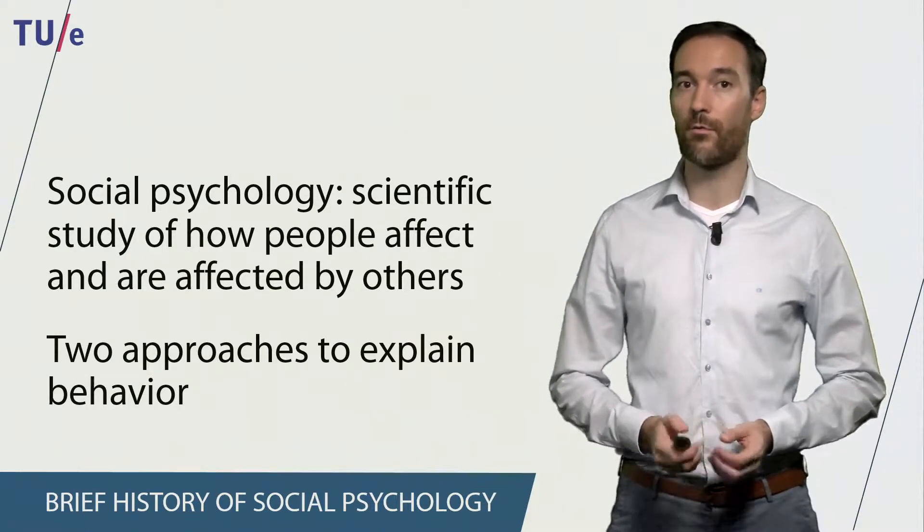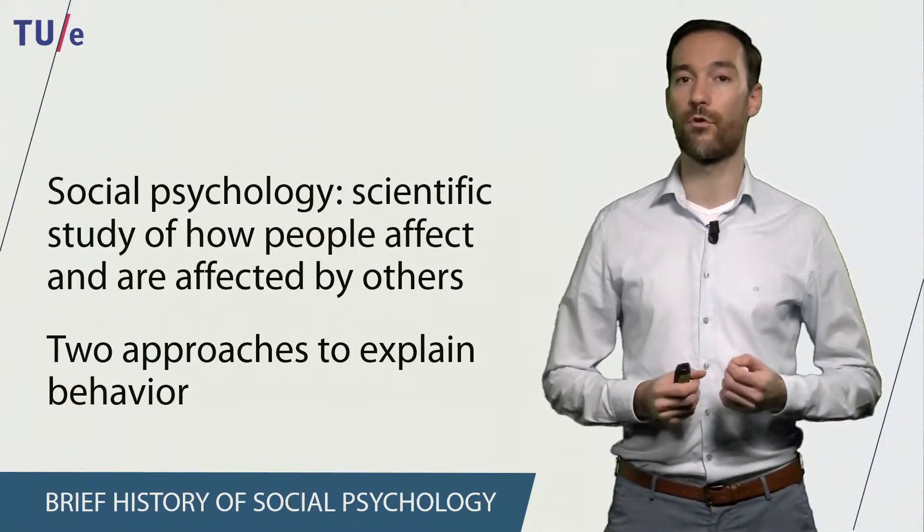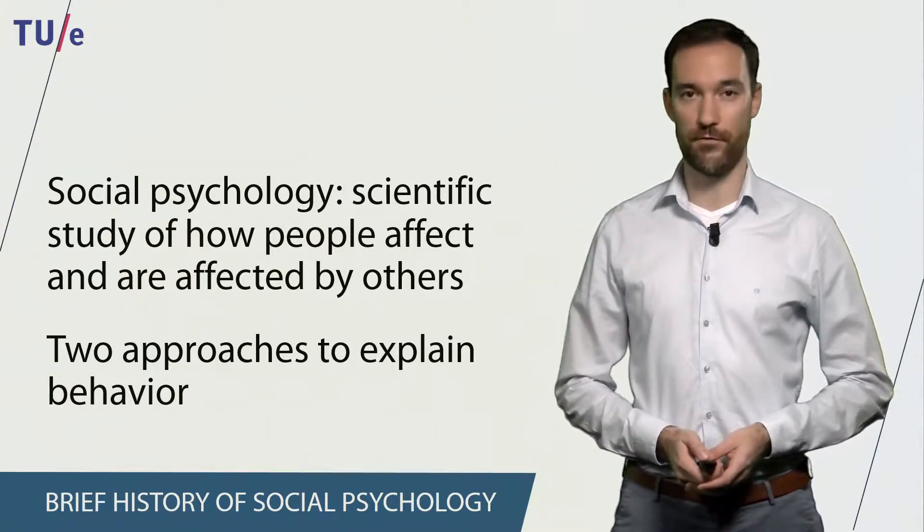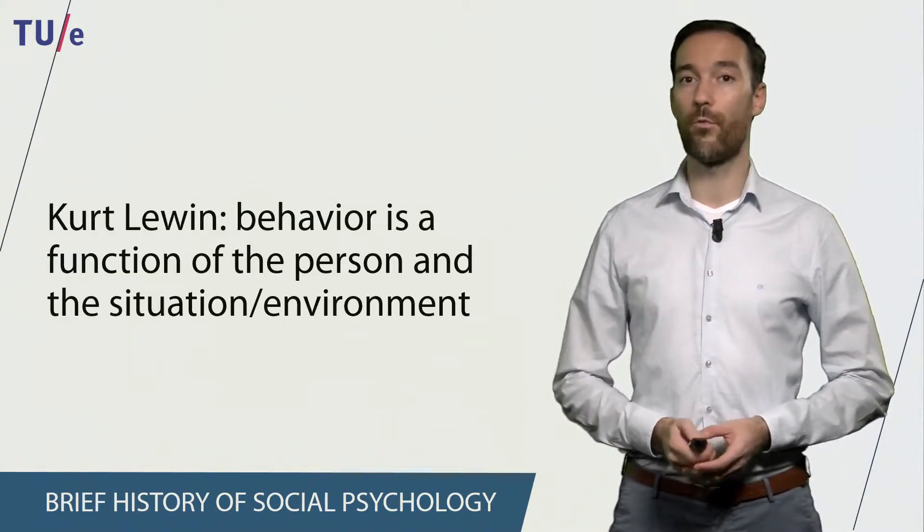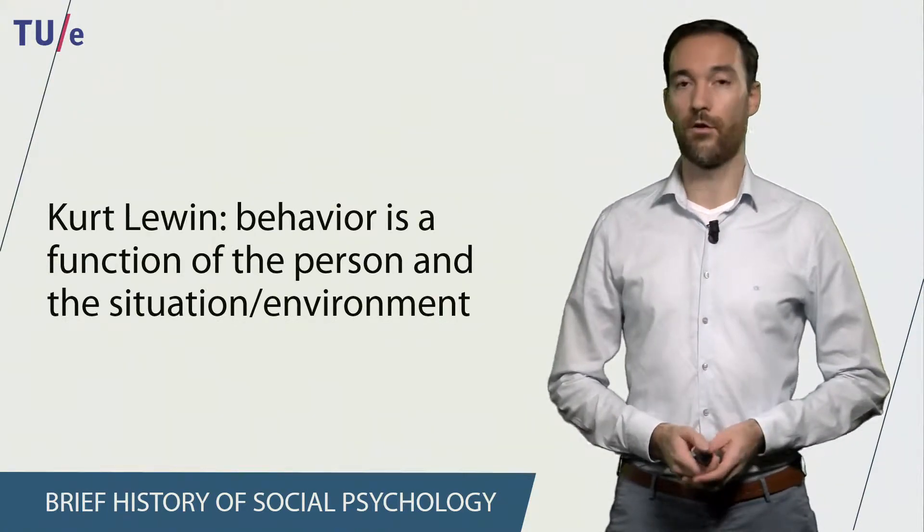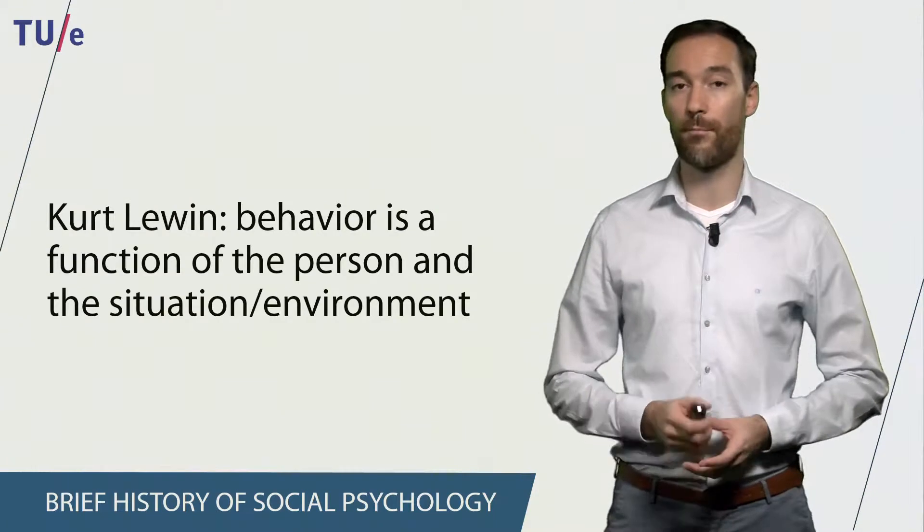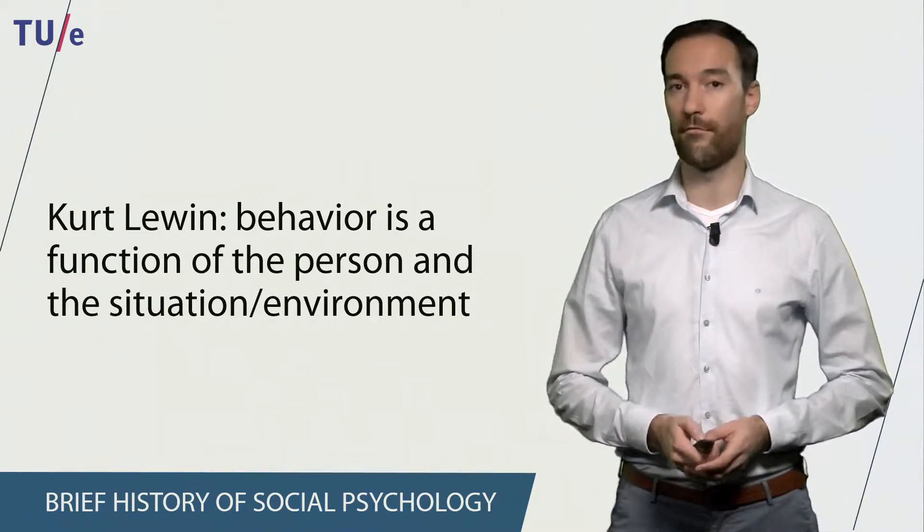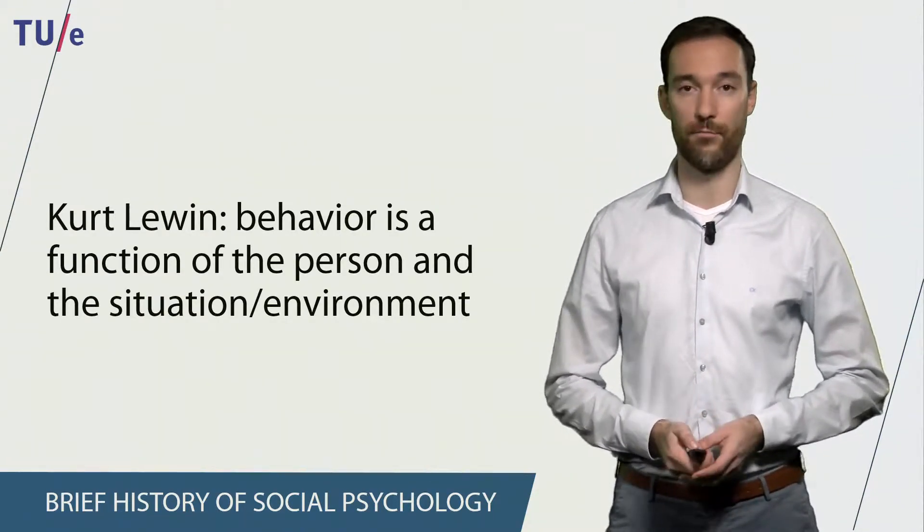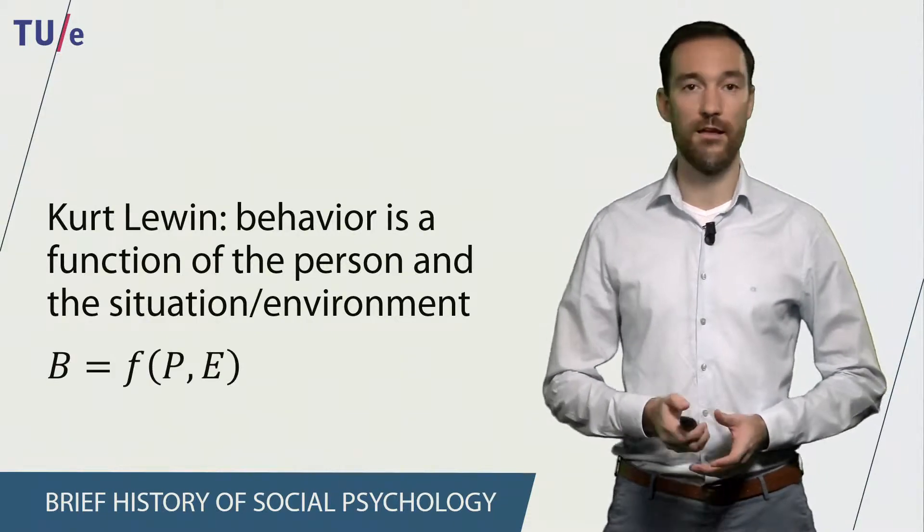In the 1930s there were two different approaches used to explain human behavior. The first approach was coined by Kurt Lewin. Kurt Lewin stated that human behavior is a function of the person and the situation or environment in which this person finds themselves. And this can be summarized in the following formula.